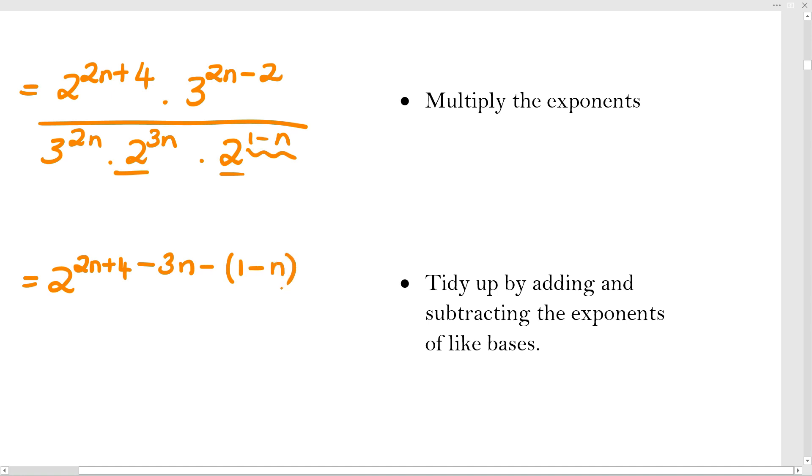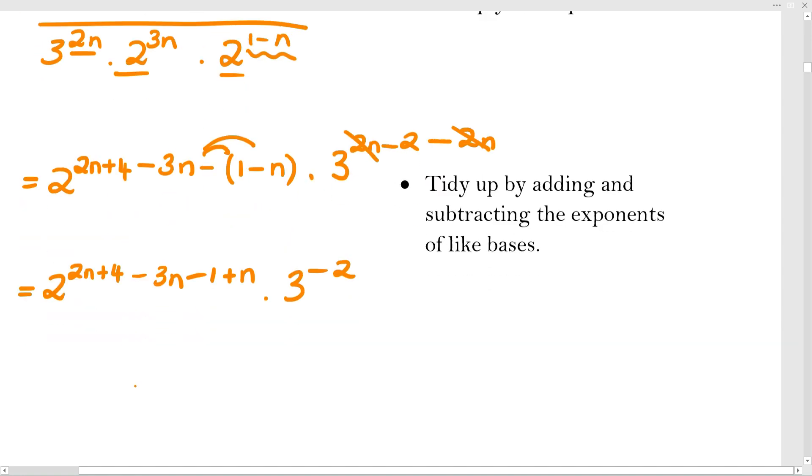And then I'm going to multiply that by 3, and the top I will have is 2n minus 2, and then I need to subtract the power that's at the bottom, which is 2n. Let's just tidy that up a little further. I'm going to have 2 to the 2n plus 4 minus 3n. Now let's distribute this negative: n minus 1 plus n, and that is multiplied by 3. I can probably already add these up here. Look there, 2n minus 2n. So it's 3 to the negative 2. That guy's definitely going to move down, but not quite yet.